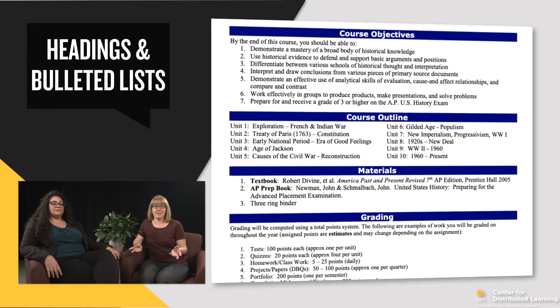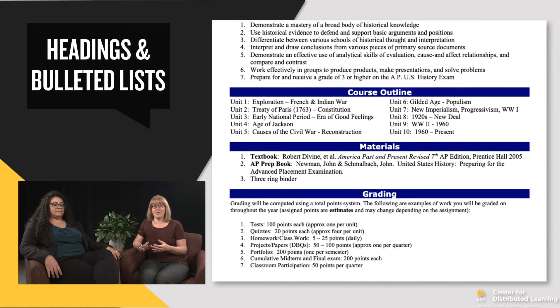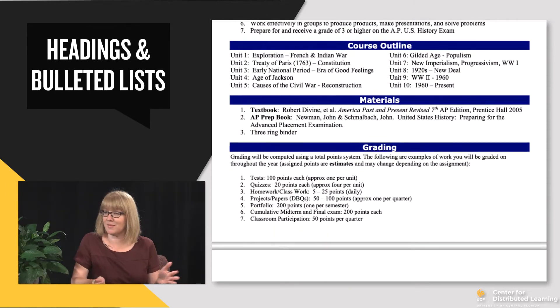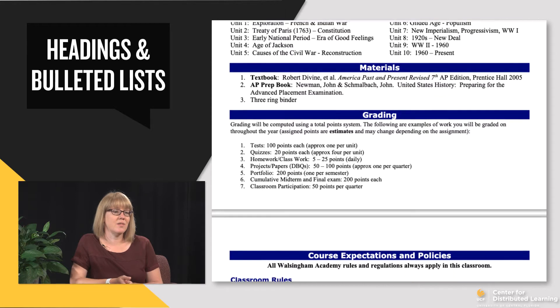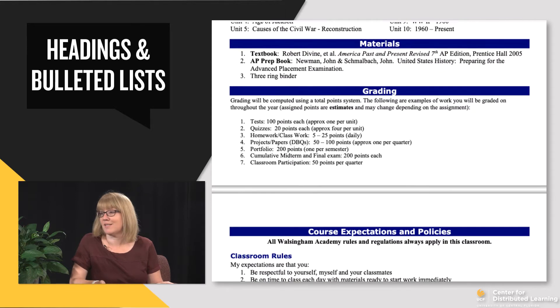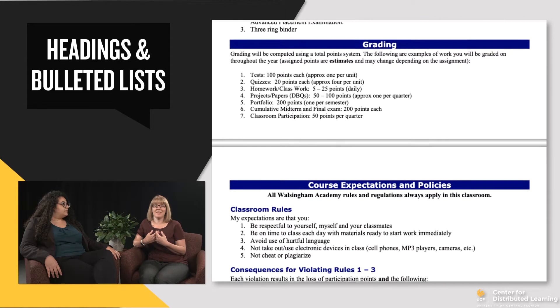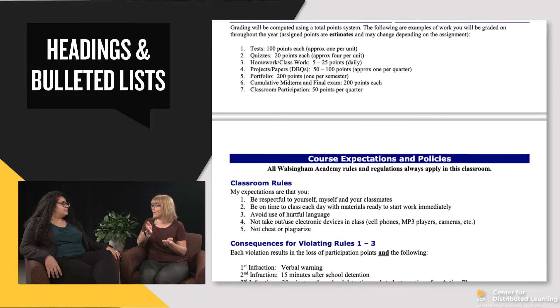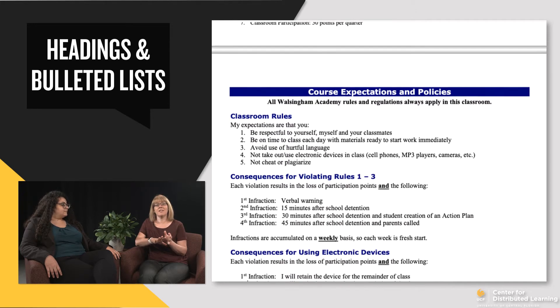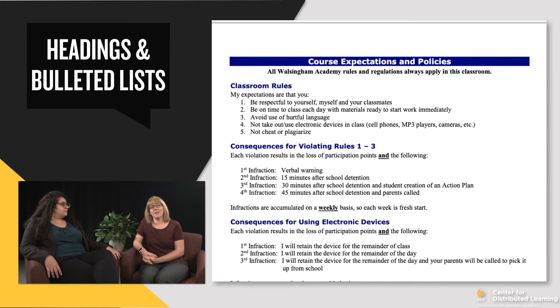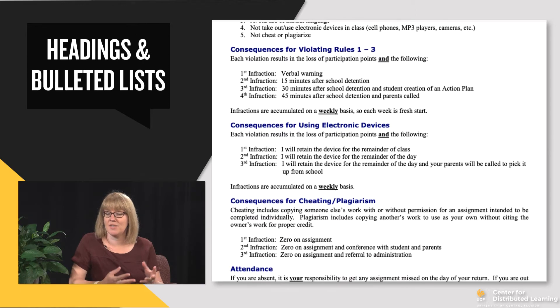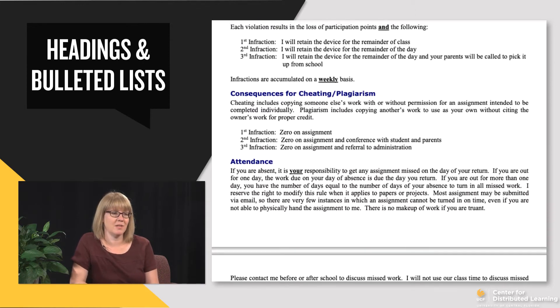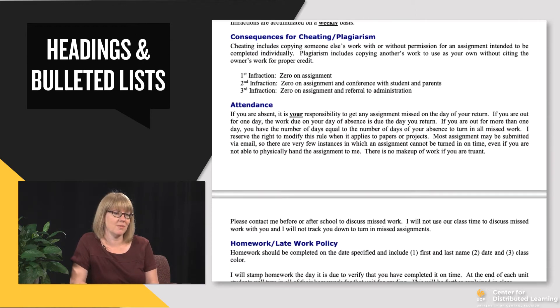One challenge is having to wade through a large syllabus with a bunch of long paragraphs — it's easy to lose interest quickly. We have a couple of tips to make it easier. One is to use headings to clearly subset the text. Also, bulleted lists are very effective — for example, listing course objectives clearly numbered sets them off nicely and lets the student more easily digest each section of the syllabus, encouraging them to read it more.